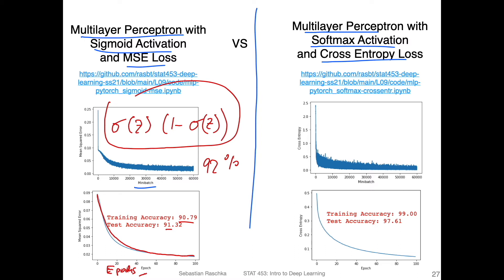Cross-entropy loss is usually better with sigmoid activation. Or you can also use a softmax activation, which I would recommend, because we have mutually exclusive classes. You can take this code example and change softmax to sigmoid — you will see there's not a big difference though.